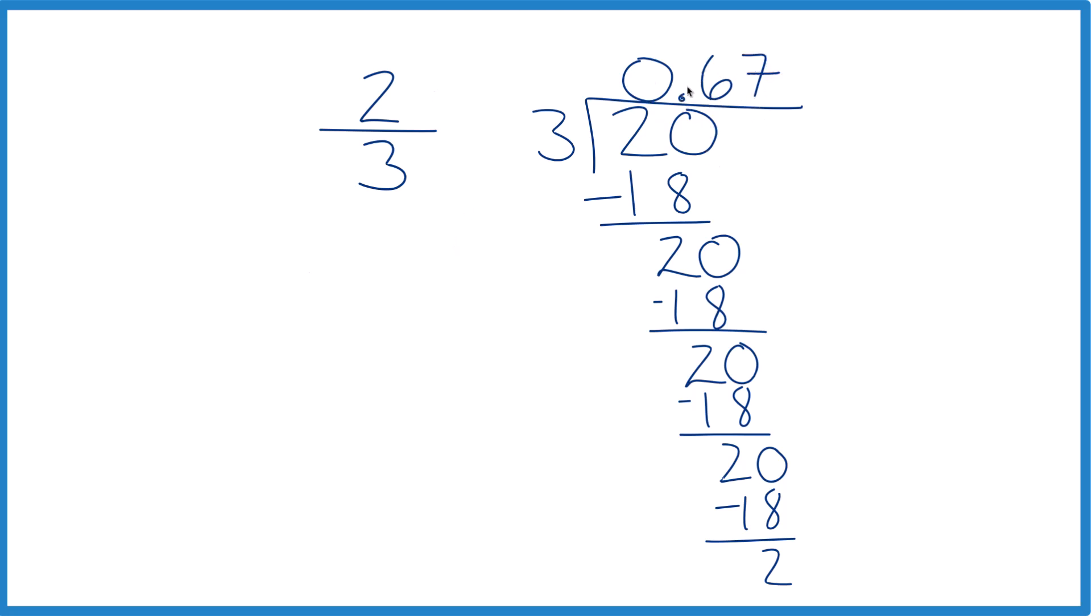Finally, if we wanted to round it to the tenths place, we round up. So this becomes seven. And we have 0.7.